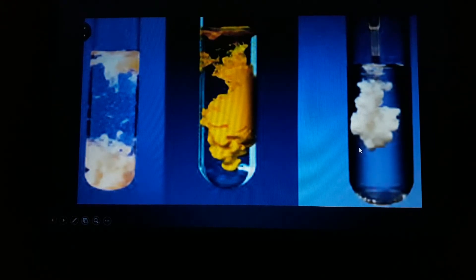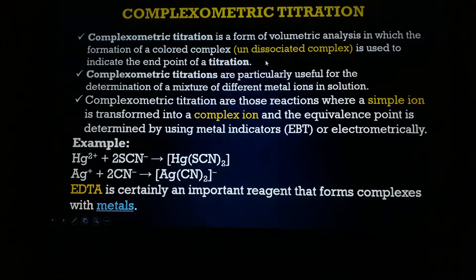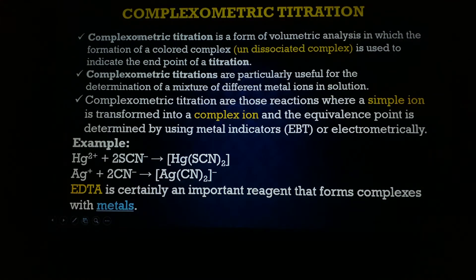The reactions are: silver nitrate reacting with sodium chloride forms silver chloride, a solid precipitate; and silver nitrate reacting with ammonium thiocyanate forms silver thiocyanate, also a solid precipitate. The formation of these precipitates indicates the equivalence point or end of the titration. I have also provided some pictures of white curdy precipitates for reference.